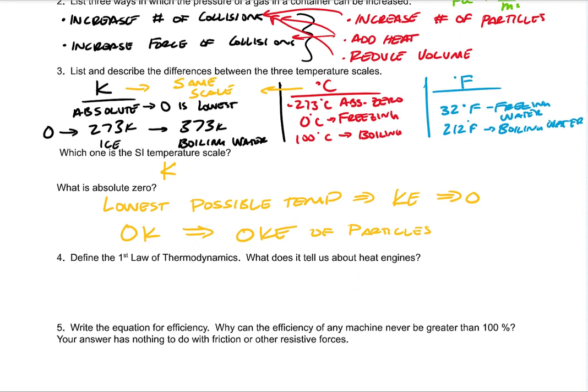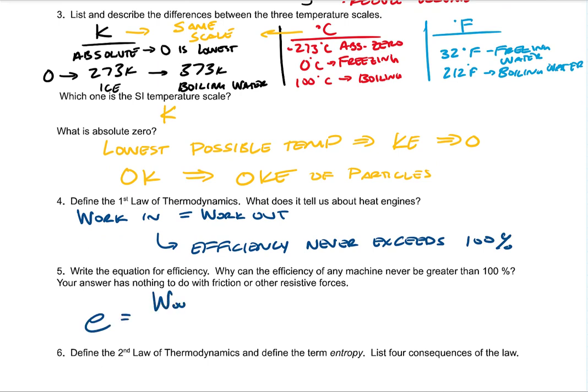First law of thermodynamics is conservation of energy or work in equals work out. What this tells us is that efficiency for a heat engine never exceeds 100%. We can't get 110% efficiency. It doesn't work that way. You only get the work out that you put in.